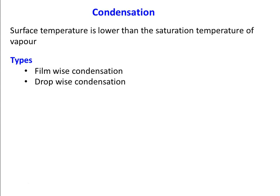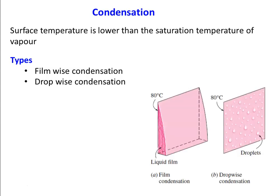When the surface temperature is lower than the saturation temperature of the vapor, condensation will occur. There are two types of condensation: one is film-based condensation, and another one is drop-based condensation.